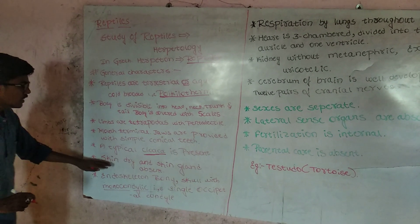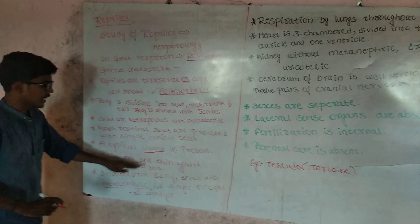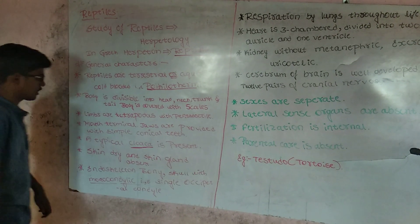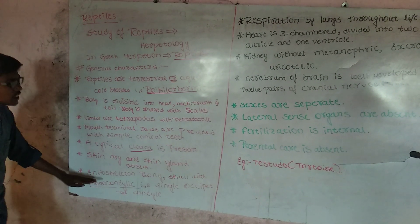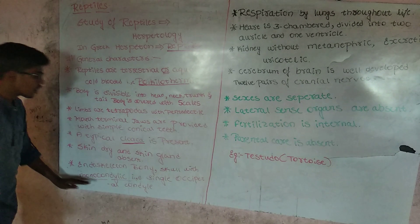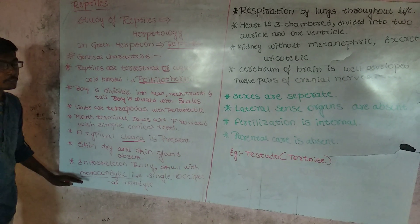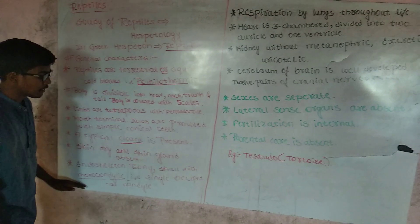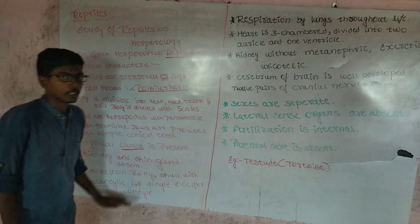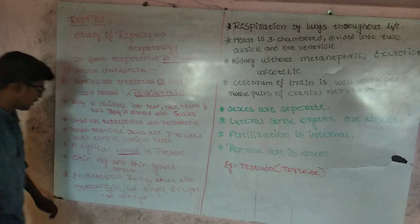Skin is dry and skin glands are absent. Endoskeleton is bony. Skull with monocondyle — monocondyle means single occipital condyle.